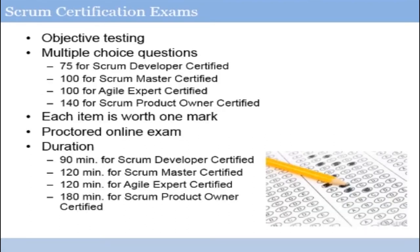There are a number of different Scrum certification exams available. The Scrum certification exams are objective tests that test your ability to utilize and adopt the Scrum practices. The Scrum examinations are multiple-choice examinations, and there are differing numbers of questions for the different tests, from 75 for the Scrum Developer Certified exam up through 140 questions for the Scrum Product Owner Certified exam. On each of the examinations, each question is worth one mark, and there's no guessing penalty, so take your best guess on every single one of the questions. Your exam will be proctored online, and the duration of the examination differs depending upon which of the exams you're taking, from 90 minutes for Scrum Developer Certified to 120 minutes for Scrum Master or Agile Expert, up through 180 minutes for the Scrum Product Owner Certified exam.